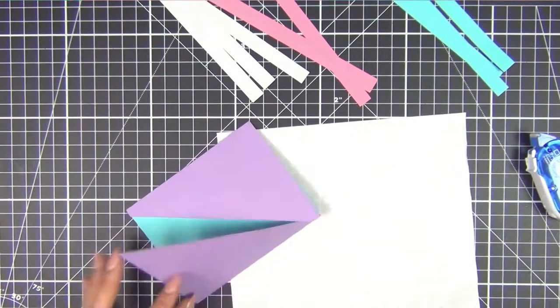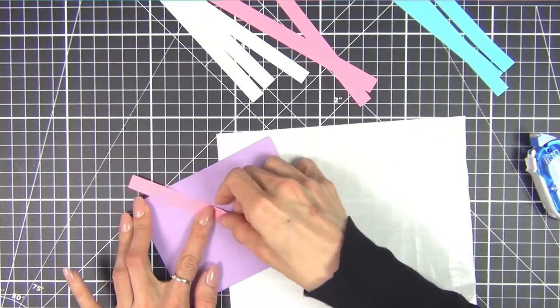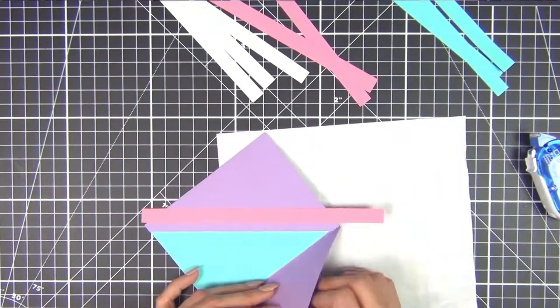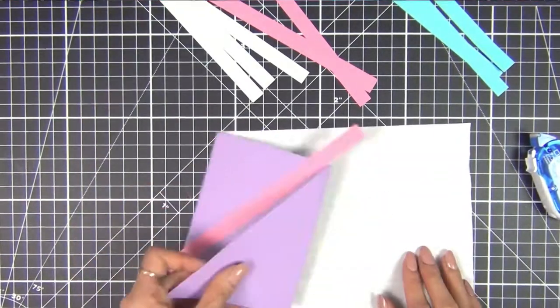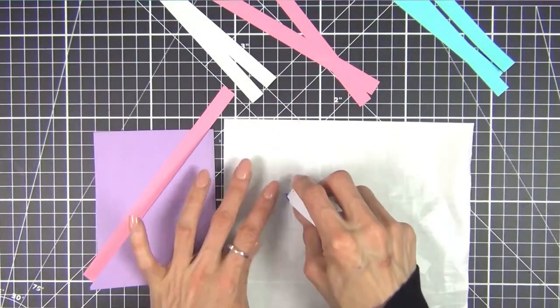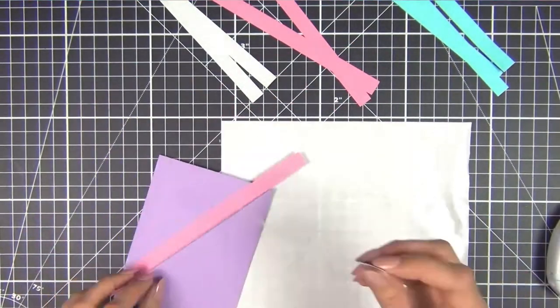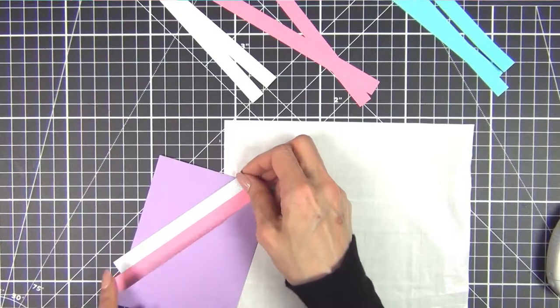I start on the top left flap because it will partially be tucked behind the bottom one and I can use the edge to butt the strip right up to it. That helps make sure the stripes are slanted at the same angle as the flaps.